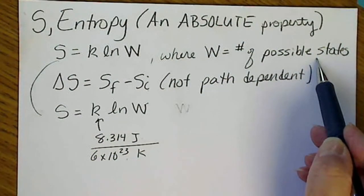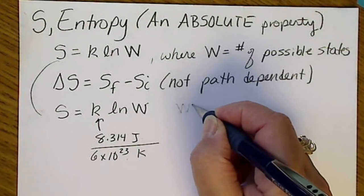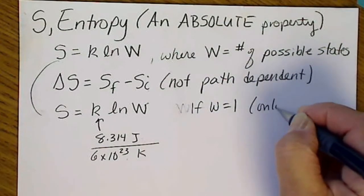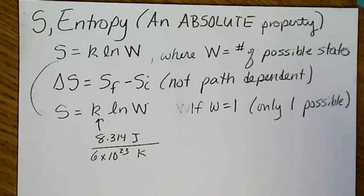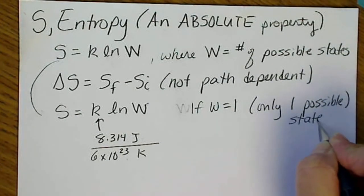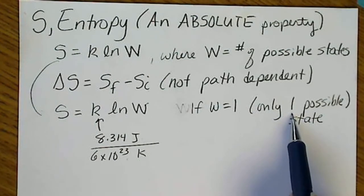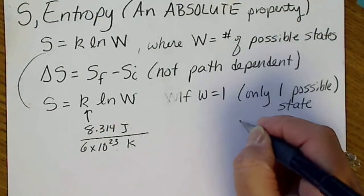W is the number of possible states. From a statistical point of view, if W equals one, that means there's only one possible state for a system to be in. That's actually where we define the third law of thermodynamics, stating that at absolute zero degrees Kelvin there is only one possible state for a perfect crystal to exist in.